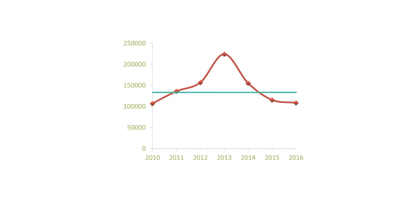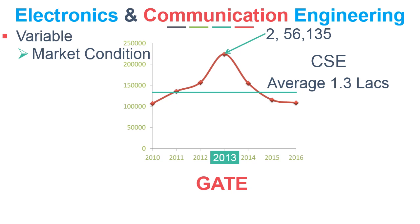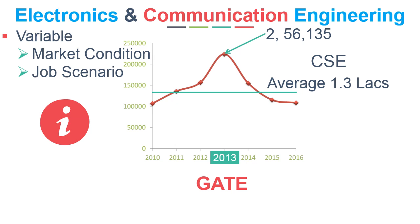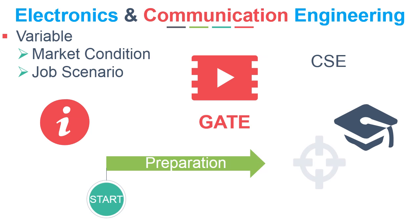The average number of students appearing for GATE from the last 6 to 7 years is around 1.3 lakhs in Electronics and Communication Engineering, with the highest number being 2,56,135. This trend is very similar to Computer Science Engineering. This variation could be due to varying market conditions and job scenarios, making it crucial for students to appear for GATE for further security. This video will help students targeting GATE next year.